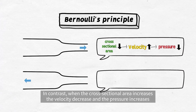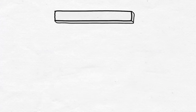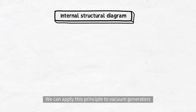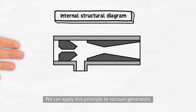In contrast, when the cross-sectional area increases, the velocity decreases and the pressure increases. We can apply this principle to vacuum generators.